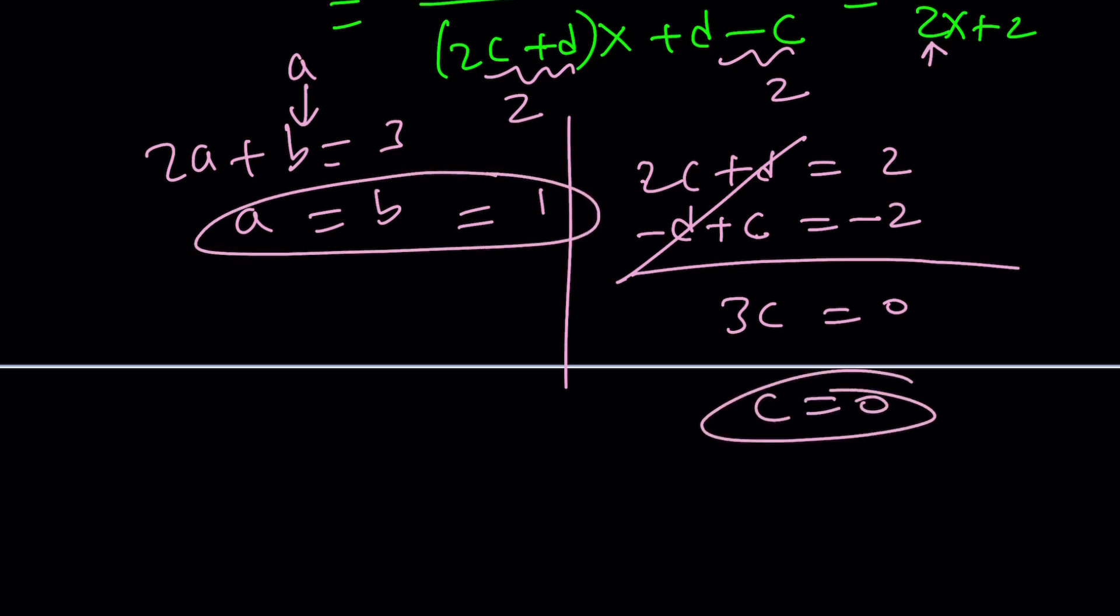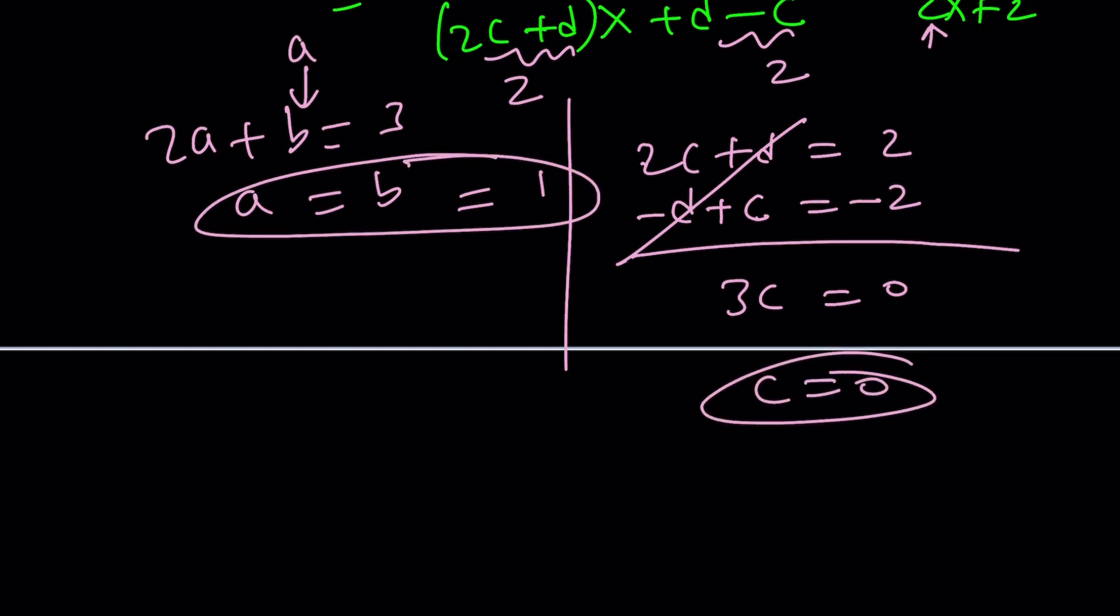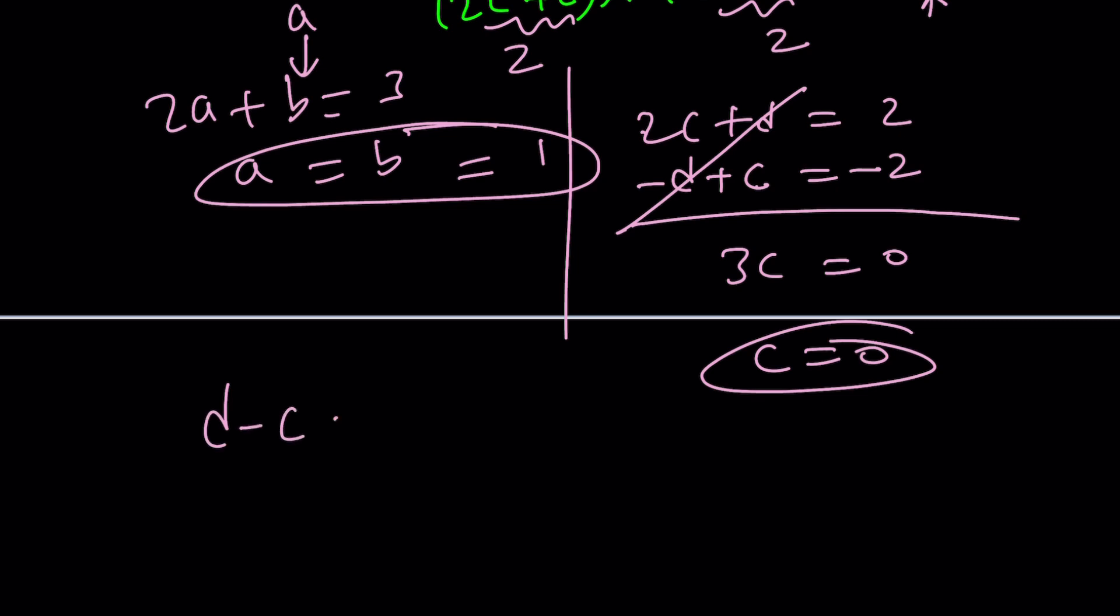So we got a, b, c so far. Let's find out d. d minus c, which is d minus 0, is equal to 2, which means d is equal to 2.